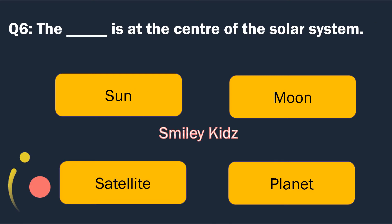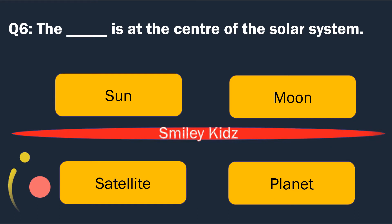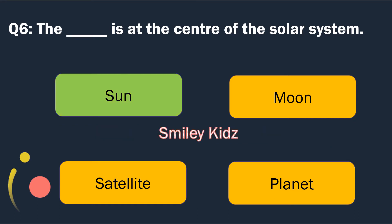Question number 6. The blank is at the center of the solar system. Options are: Sun, Moon, Satellite and Planet. The right answer is Sun. The Sun is at the center of the solar system.